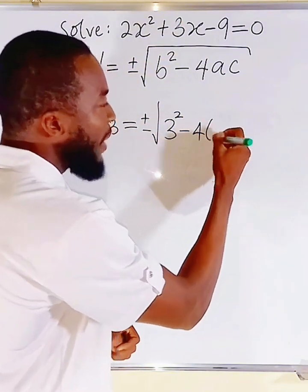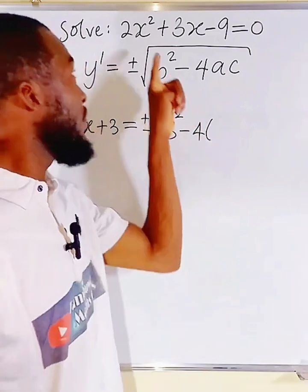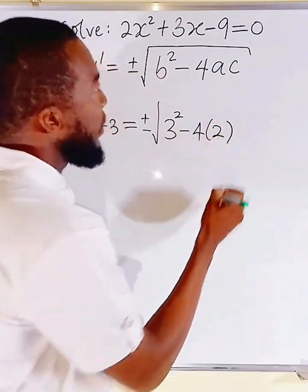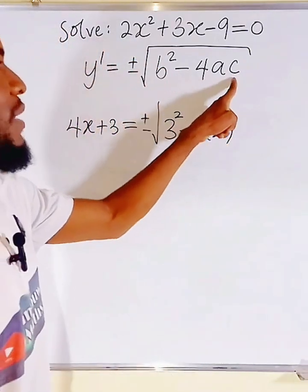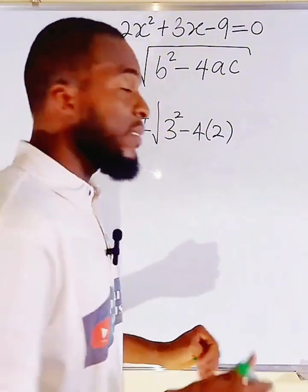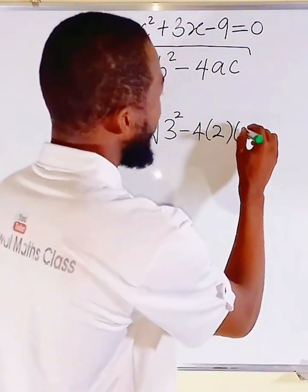Minus 4 multiplied by a. You know, a is the leading coefficient, which is 2. Multiplied by c, and c is the constant, which we have as negative 9.